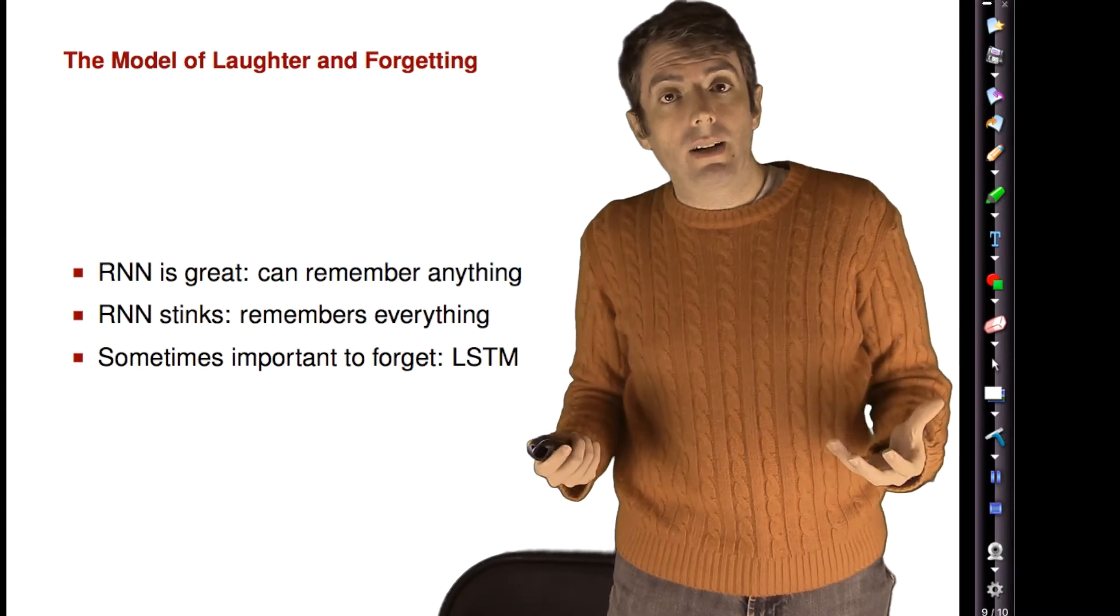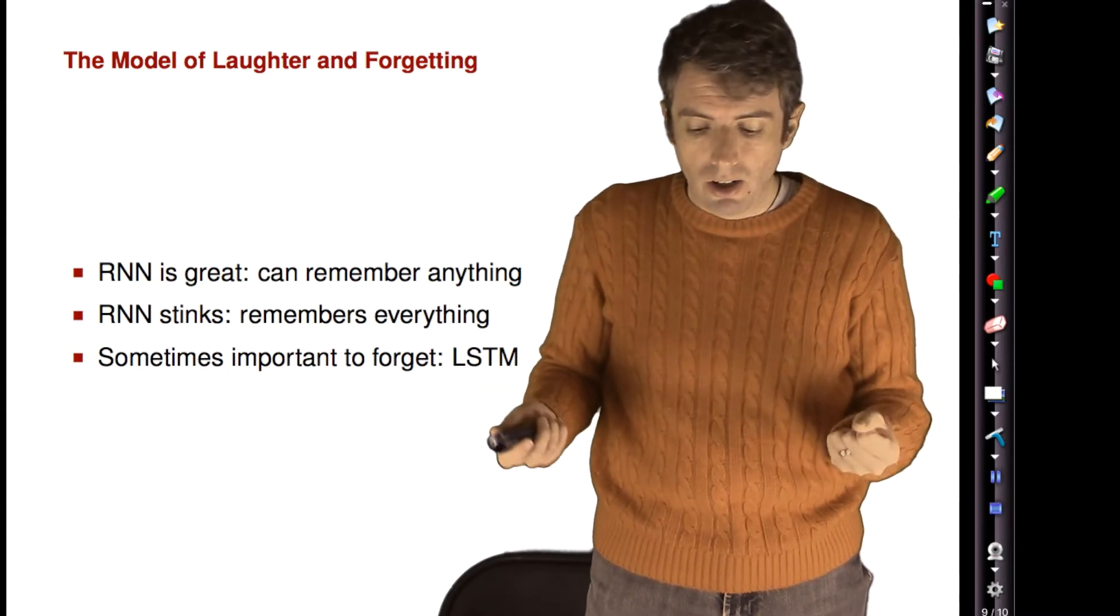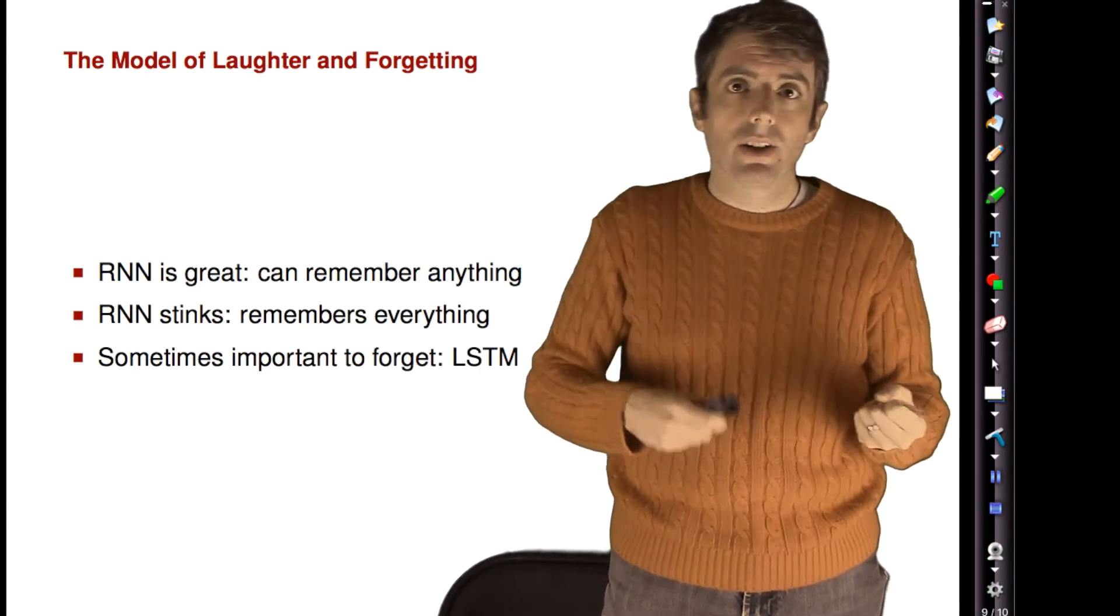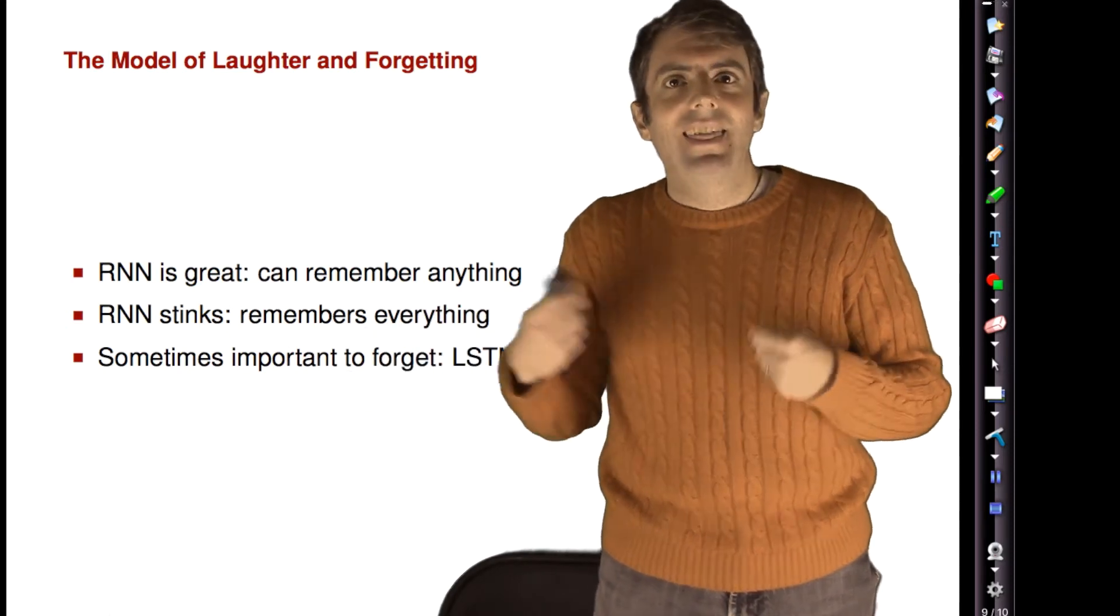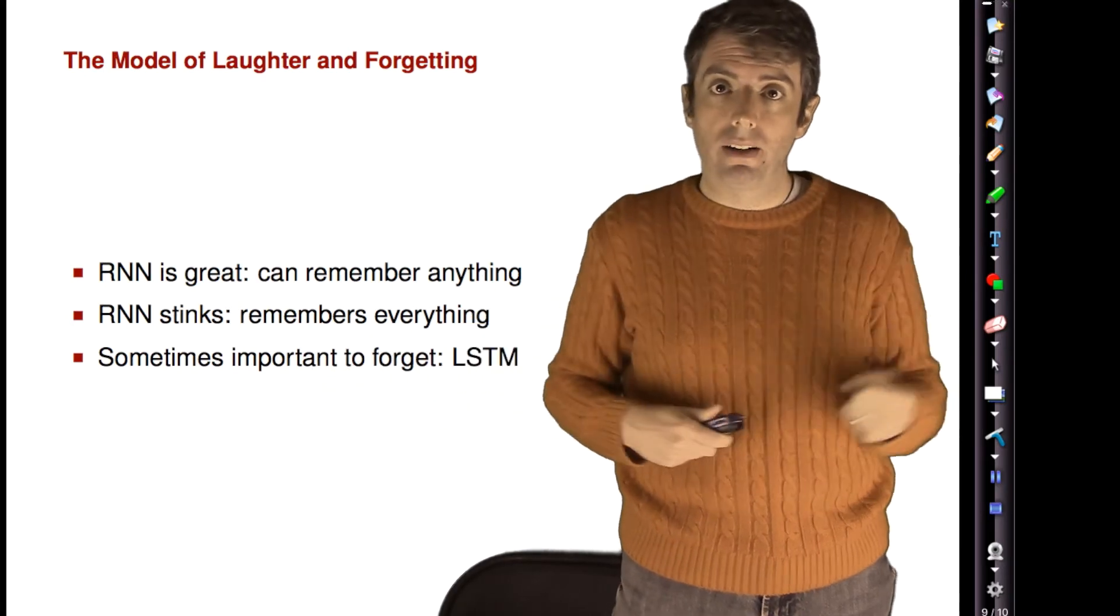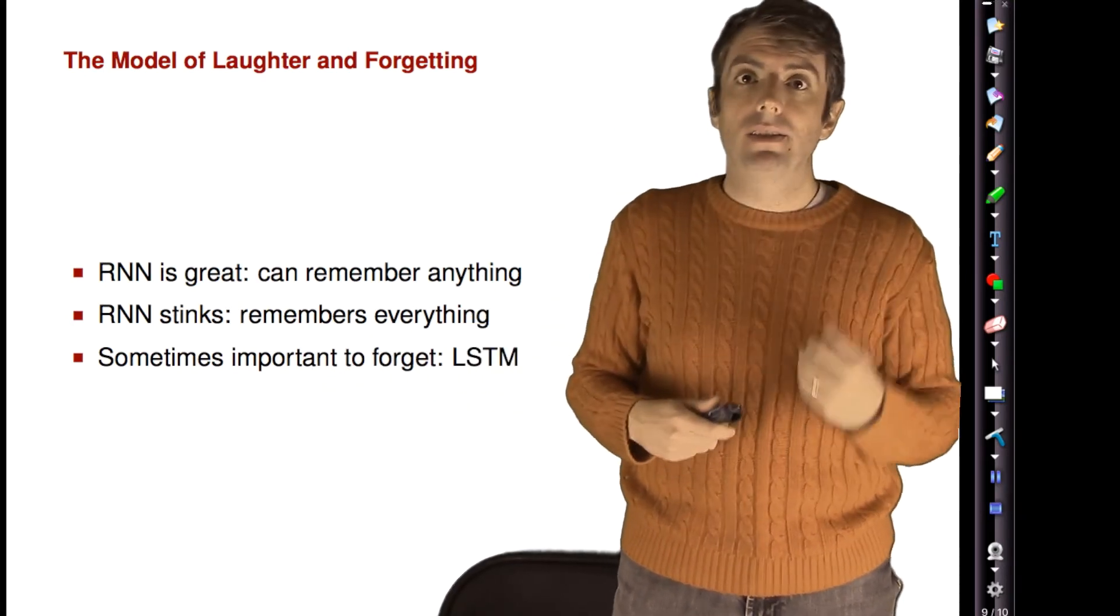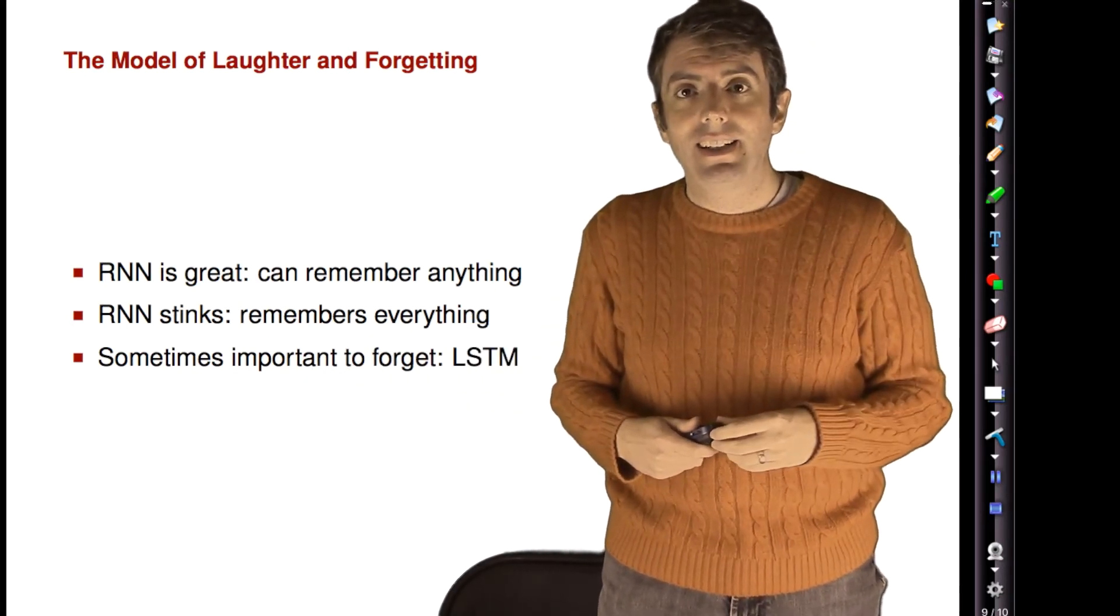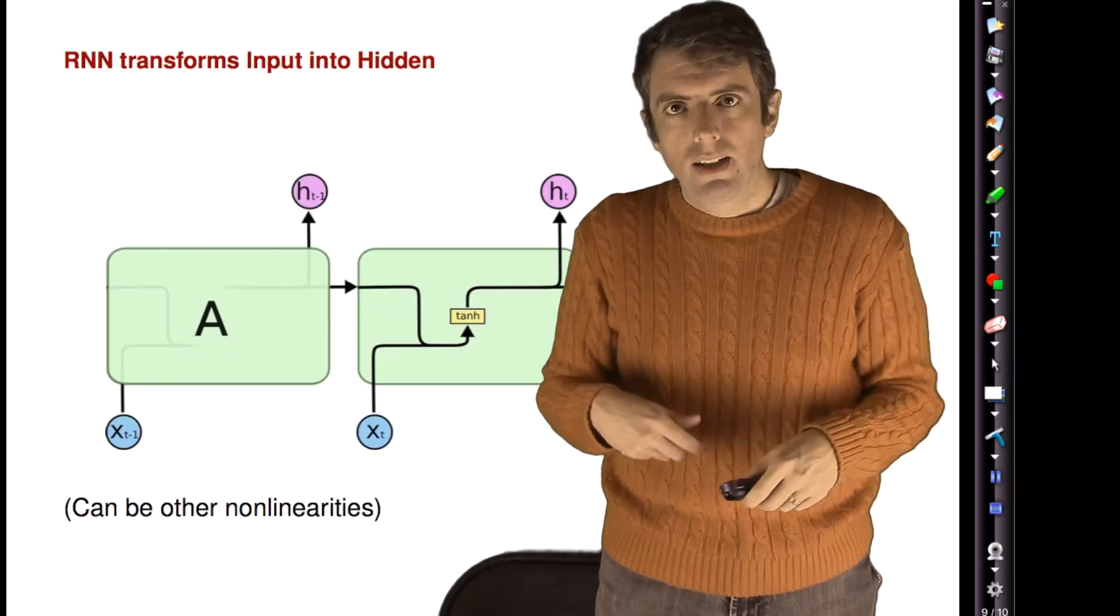What we're going to talk about today is a model called the LSTM, the long short-term memory model, that allows the model to selectively choose what it remembers and what it forgets, thus emphasizing the parts of the sequence that can help it do the best.